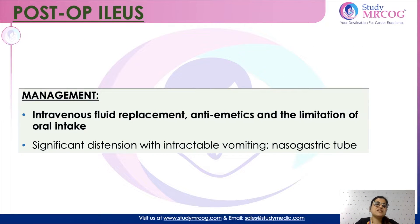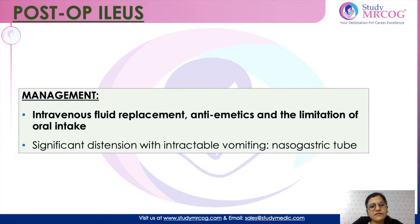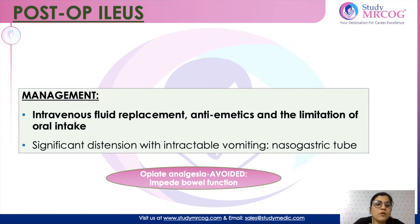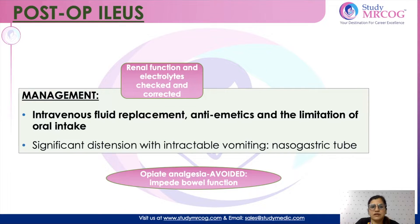You manage these patients conservatively using IV fluid replacement and limiting oral intake. If the symptoms do not resolve and the patient presents with intractable vomiting, then you can put an NG tube. You will avoid opioid analgesics because they affect bowel function, and you should measure renal function tests and electrolytes. If any abnormality is detected, then you correct it.